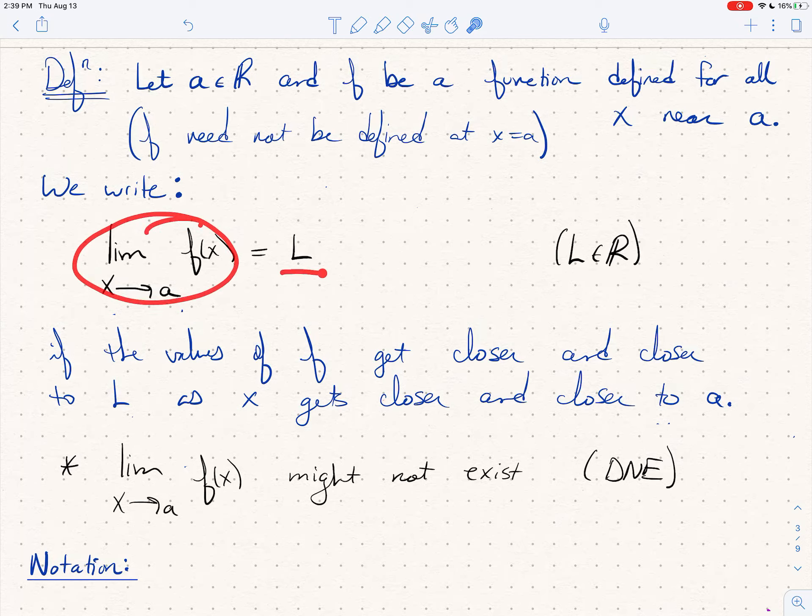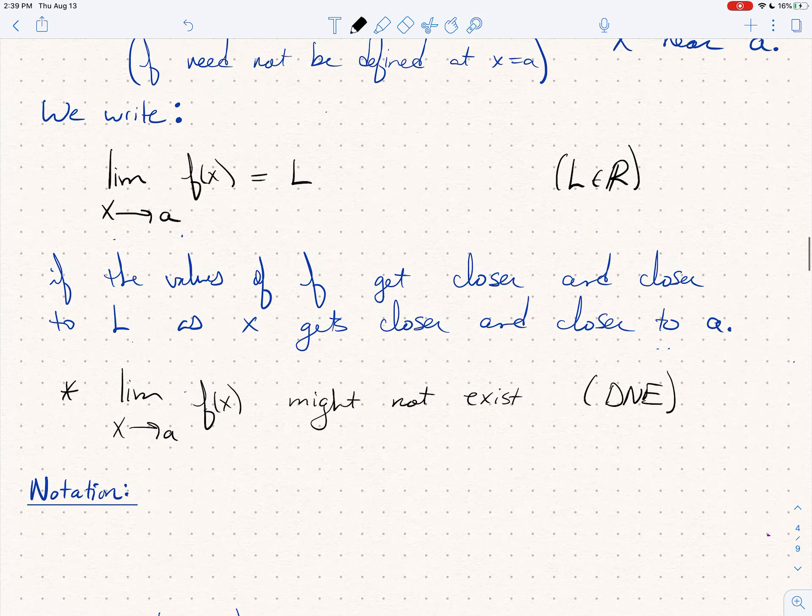I'm not saying that every time I write down limit x goes to a of f(x) I'm not saying that's always going to be a number. I'm saying we say this expression if f gets closer and closer and closer to L as x gets closer and closer to a. If that doesn't happen, if there's no L where that happens, then we say that the limit does not exist.